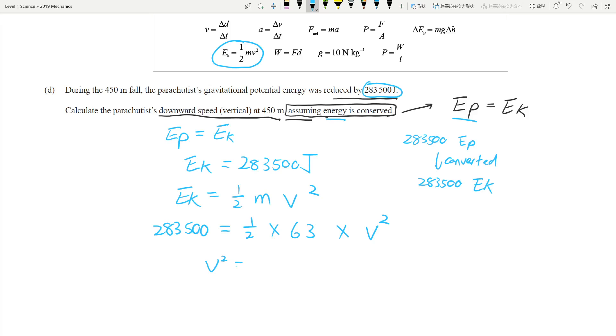If I rearrange this, V squared will equal to 283,500 times 2, and then divide by 63. That is just making the V squared the subject. What do we do after that? We should get V squared equal to, if I quickly punch these numbers in my calculator, 283,500 times 2 divided by 63. I got a nice number, which is 9,000. Now V will equal to the square root of 9,000, and that's going to give you 95 meters per second because you are calculating the speed. This is an excellence calculation, so make sure you can do this.